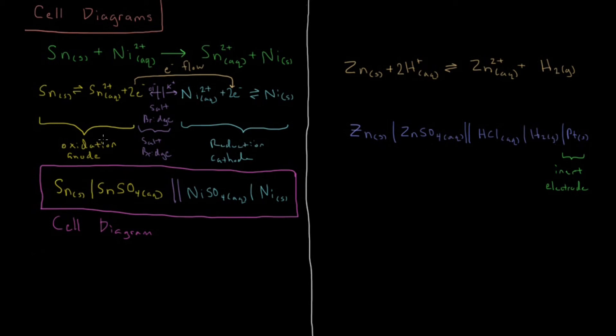And if we reversed this reaction such that we had the reverse, we can show you what happens when our inert electrode is the anode. Then we would have it on the outside as well. So our inert electrode is always going to be on the outside here.